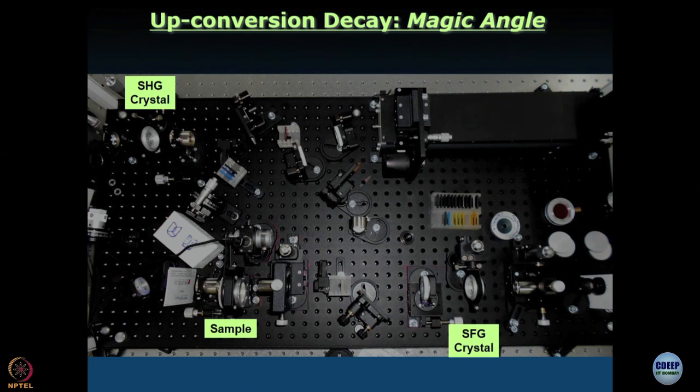Generally, you excite using a linearly polarized light, and you do that because the laser you use is usually linearly polarized. If you are talking about a Ti:sapphire laser, it is very nicely linearly polarized. If you are working with a diode laser, you cannot use it for upconversion or TCSPC. Diode lasers are usually elliptically polarized — a mixture of horizontal and vertical polarizations — so you put in another polarizer to generate one kind of polarization.